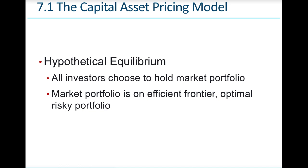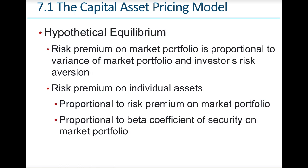The market portfolio will be on the efficient frontier, meaning the portfolio is constructed so that stocks in it lie on the edges of the efficient frontier. The risk premium of the market portfolio will be proportional to the variance of the market portfolio and the investors' typical degree of risk aversion.